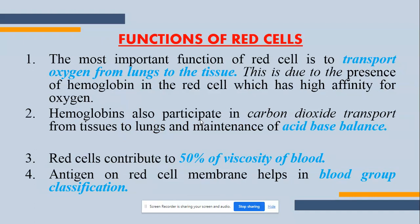Now we will see the functions of red blood cells. The first function is transport of oxygen from lungs to tissues, because this is the main function of hemoglobin. The second function is that it maintains the acid-base balance. The third function is that red cells contribute to 50% of the viscosity of blood — blood is thicker than water because of its blood components. And antigens on the red cell membrane help to differentiate blood groups.